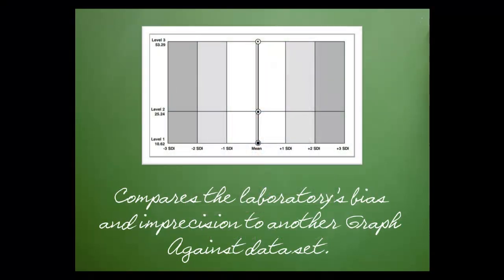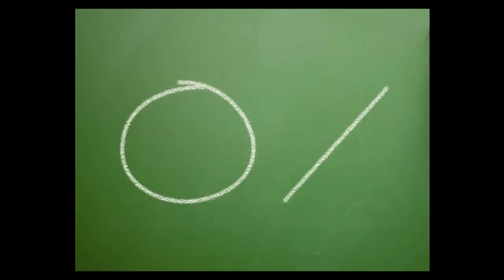The Yunt chart compares the laboratory's bias and imprecision to another graph against data set. I love it when a product can do something very complicated but make it look simple. I believe this is a core concept of good design. This is why I'm so excited about this tool. Yunt charts take multiple complicated concepts and break the information down into two basic design elements, a circle and a line.